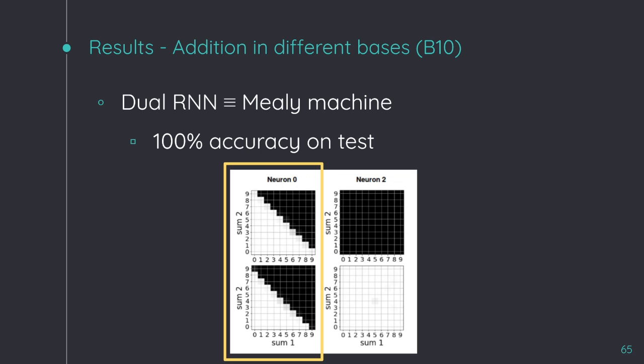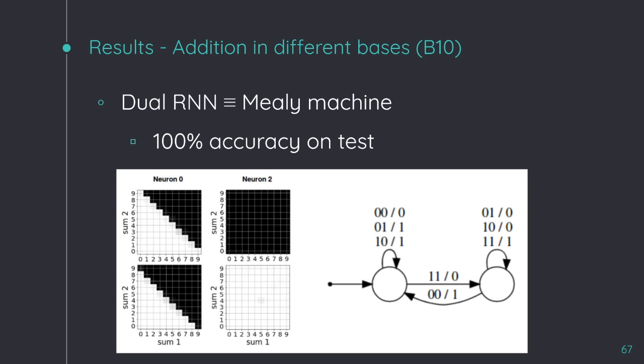In this example, the neuron 0 is just looking at when to activate the carry, and the neuron 2 is just keeping the carry in memory. I have to say that I have placed the automaton of base 2 for simplicity, but all the other bases that we consider generate the same automaton just with more additional labels in the transitions.